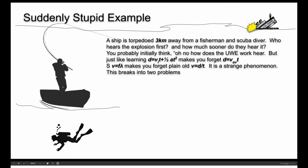Now we go back to what I call a suddenly stupid example. A ship is torpedoed three kilometers away from a fisherman and a scuba diver immediately under his boat. Who hears the explosion first? And how much sooner do they hear it? You probably initially think, oh no, how does the universal wave equation work here? But just like learning d equals vit plus half at squared suddenly makes you stupid, and you forget d equals v average t. So when we teach you v equals f lambda, all of a sudden, it's like you never learned speed is equal to distance over time before. It's a strange phenomenon. I suffered from it when I was younger. You will suffer from it. It's something to do with we figure what we were just taught must be the thing that needs to be applied. This will just break into two simple problems that you could have done the first day of this course.